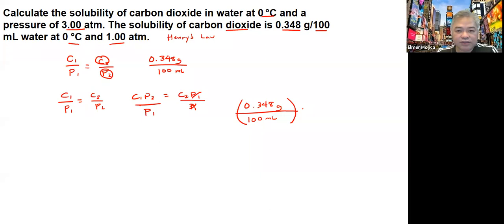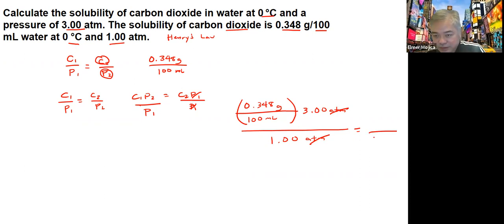...and then the pressure that we have is 3 atmospheres, divided by 1 atmosphere. So if we're going to get the value there, we can write 100 mL.